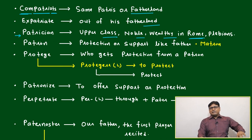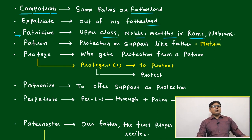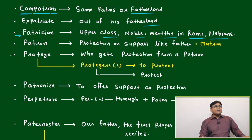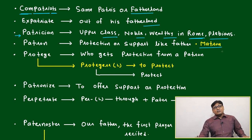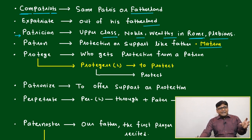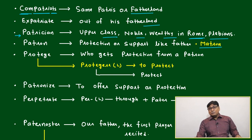If any royal family or noble family is there, they are called patrician, and the common people are called plebeians. Patron means protection or support like a father, and matron means protection, care, or support like a mother.